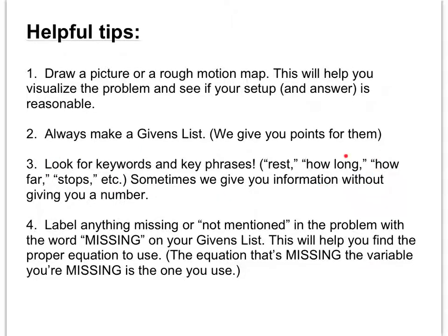Look for keywords and key phrases. One thing that you saw in some of the problems is that there are keywords that I use to solve the problem. So if you see something is at rest or it says how long or how far something stops, this usually means something. Either it tells us that something is stopping, which means a velocity is zero somewhere. And also, key phrases like how long. That means solve for time. How far? Solve for displacement. So those are some key phrases where we're telling you information, but not really.